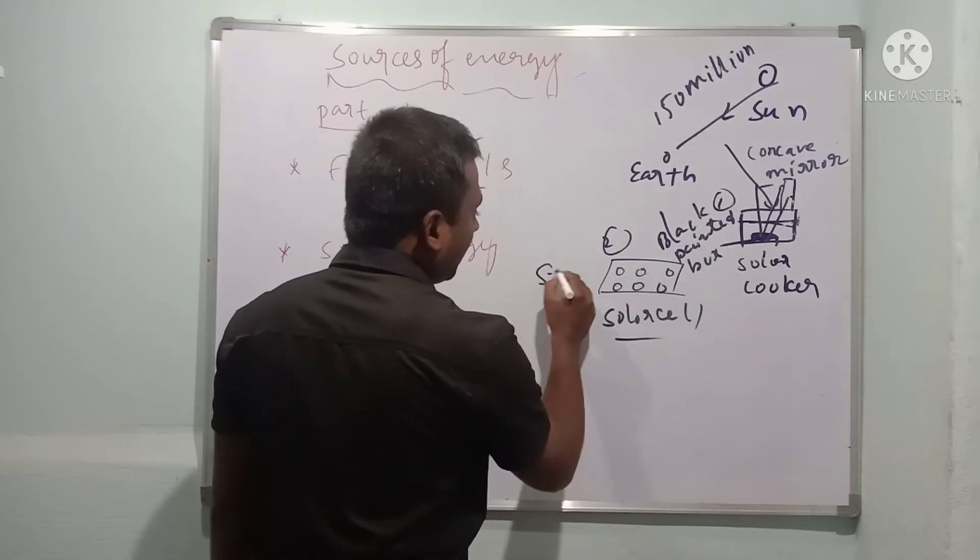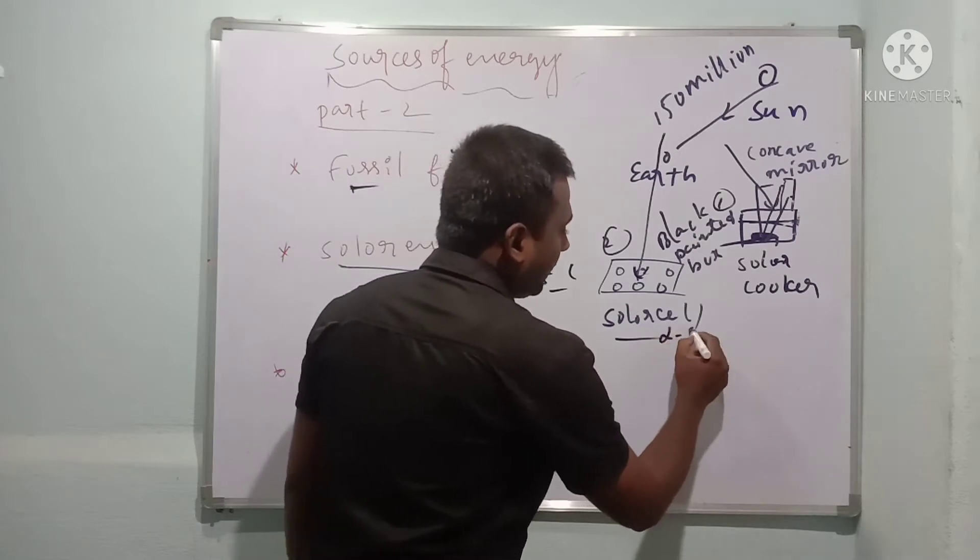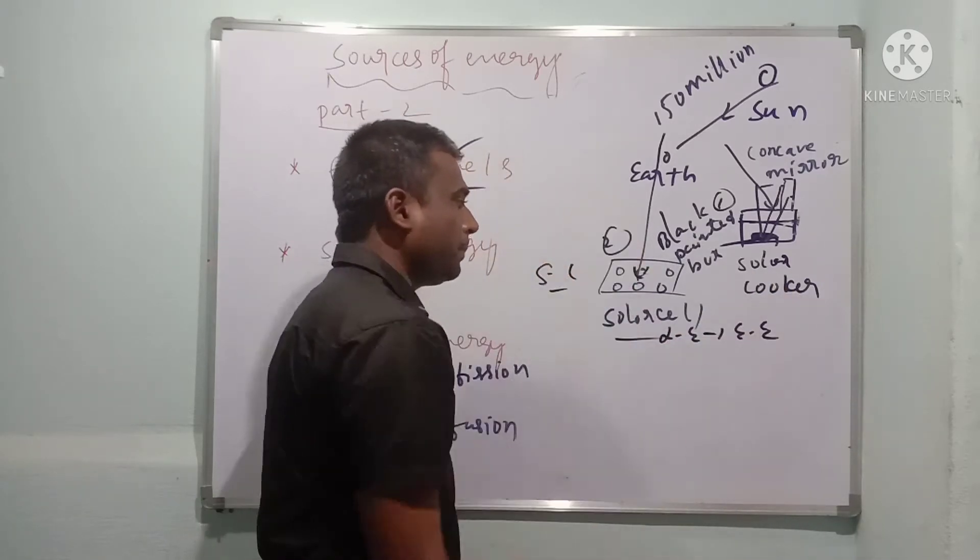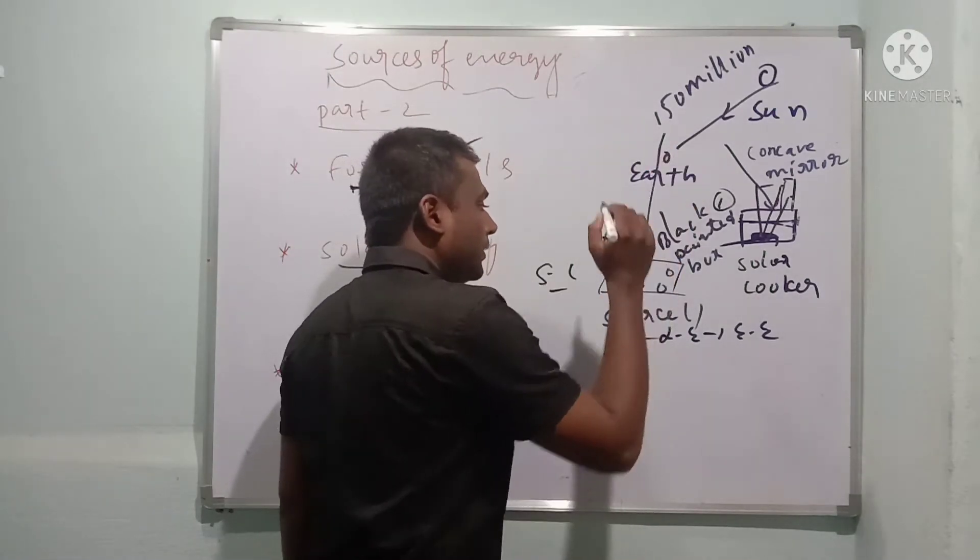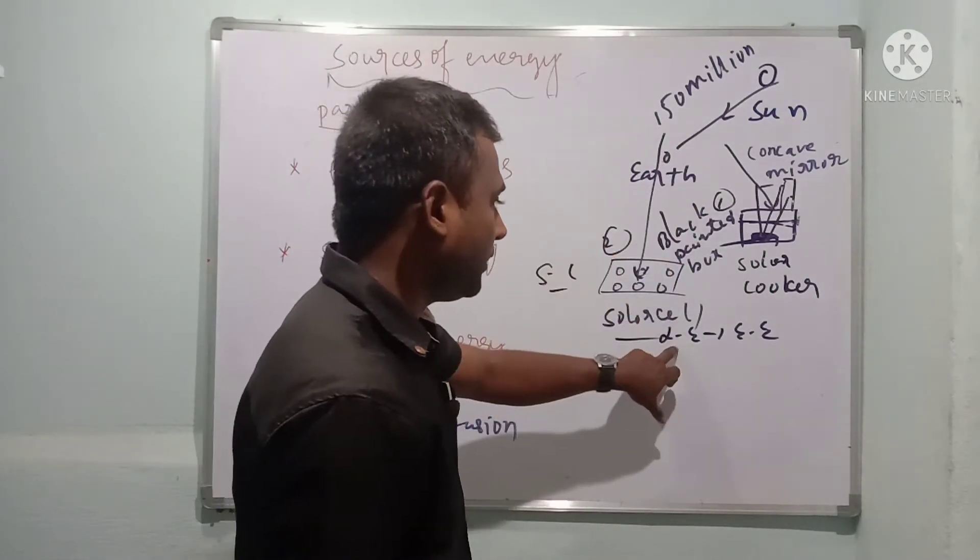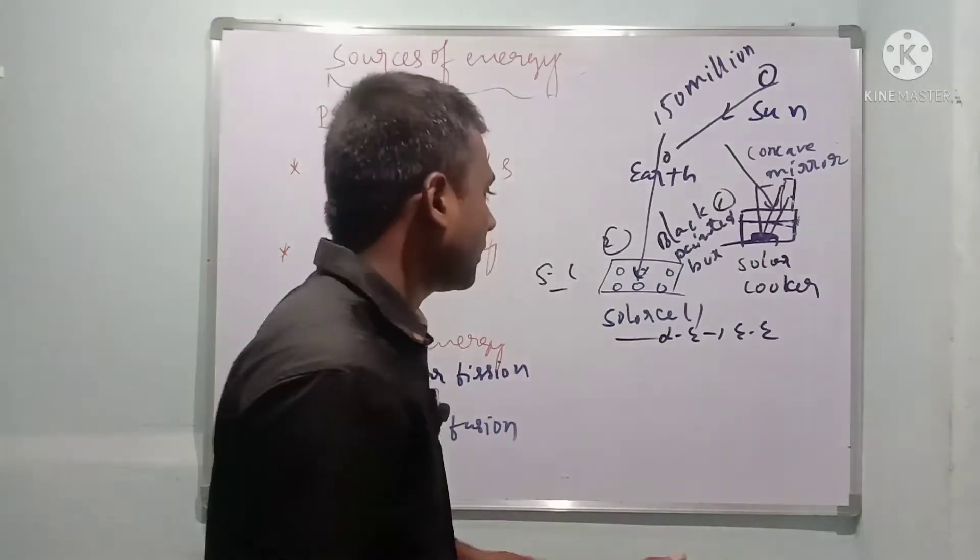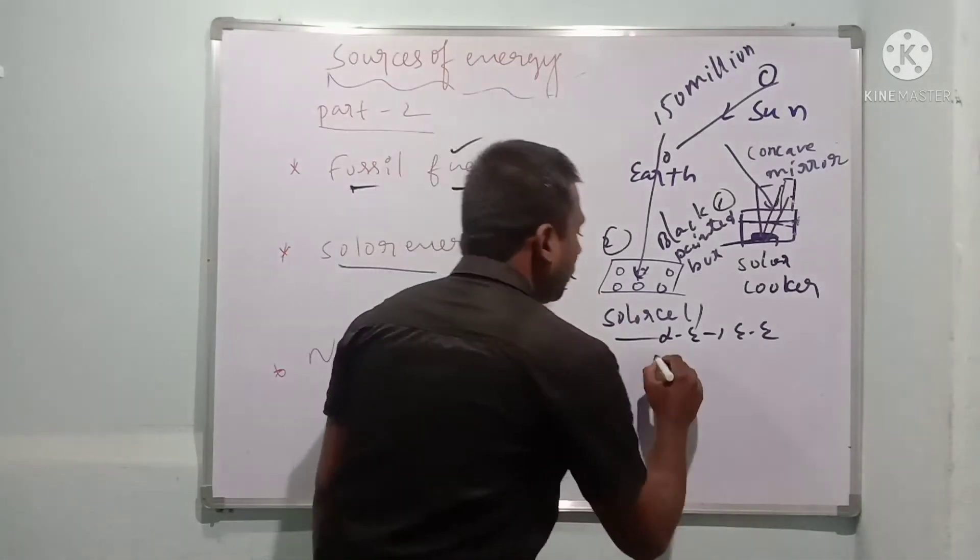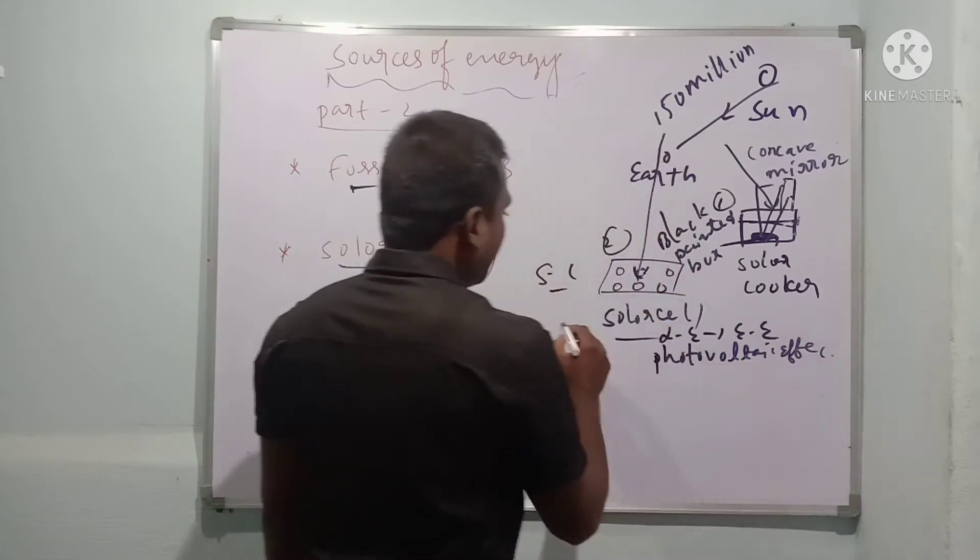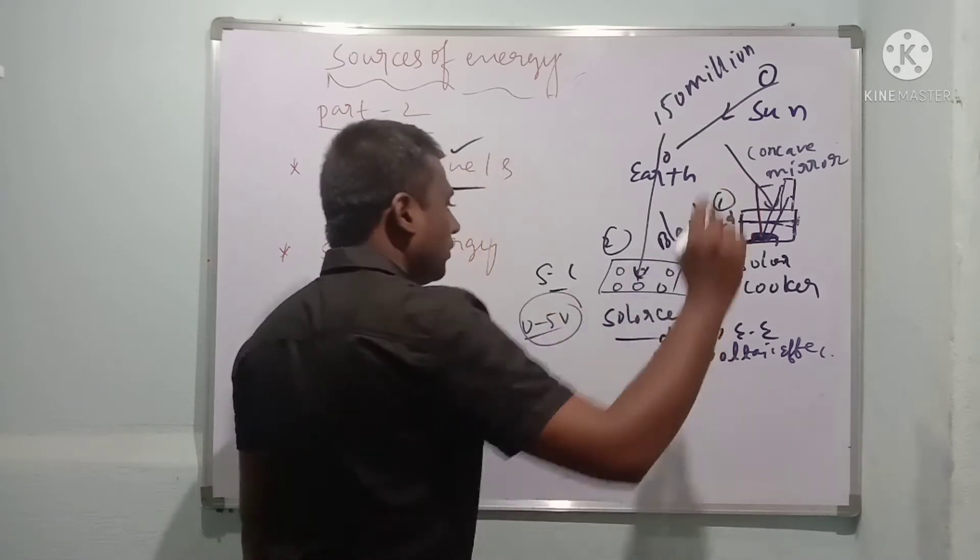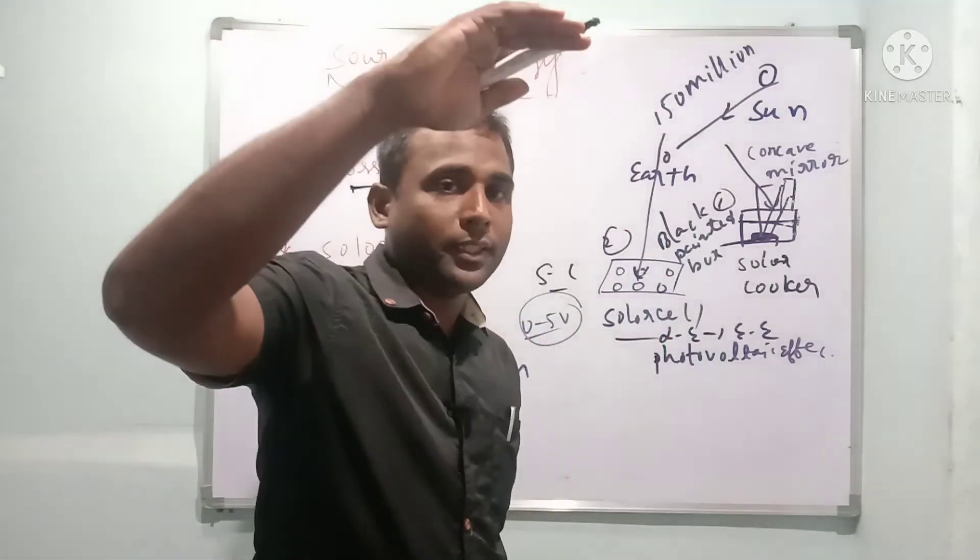Solar cell is made up of semiconductor devices like silicon and germanium. When sunlight falls on this solar cell, it converts light energy into electrical energy. This principle is called photovoltaic effect. When sunlight falls, it converts light energy into electrical energy due to emission of charged particles - there's formation of electrons. This is called photoelectric effect or photovoltaic effect. We can produce 0 to 5 volts.